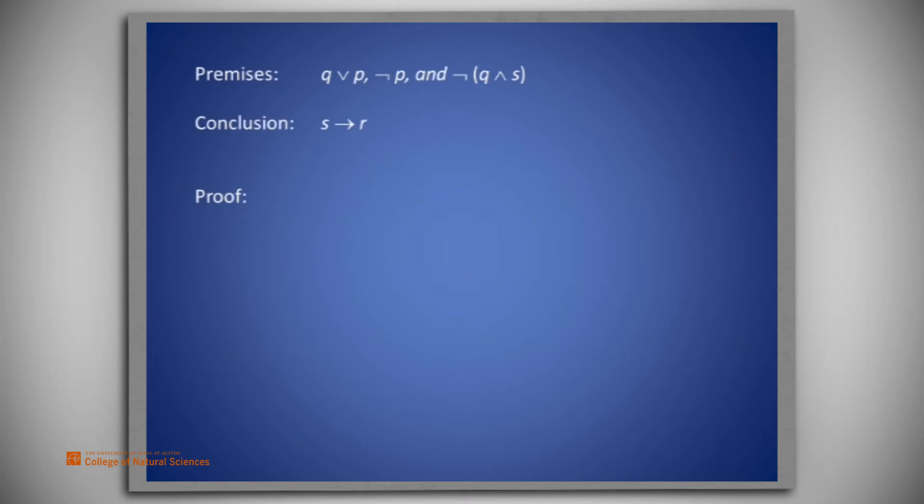To do it, it may be easier to put S implies R into its alternative form using conditional disjunction. Conditional disjunction says that the statement S implies R is the same statement as either S is false or R is true.